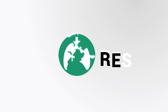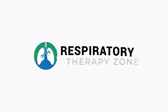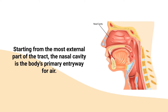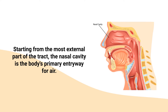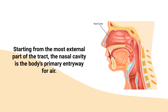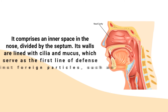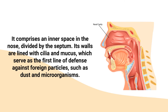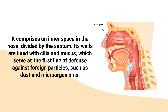Starting from the most external part of the tract, the nasal cavity is the body's primary entryway for air. It comprises an inner space in the nose divided by the septum. Its walls are lined with cilia and mucus, which serve as the first line of defense against foreign particles such as dust and microorganisms.